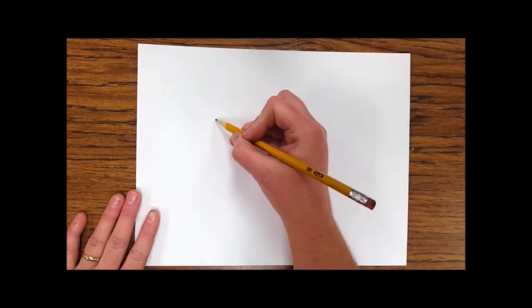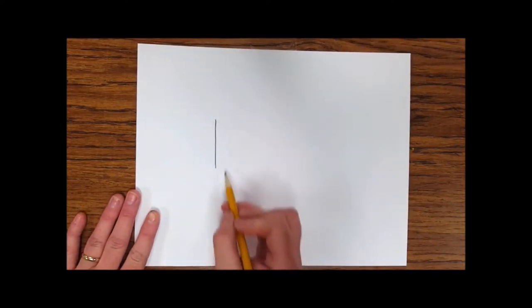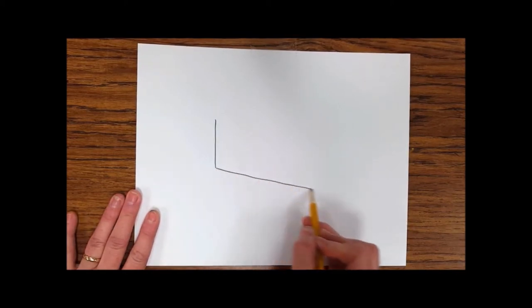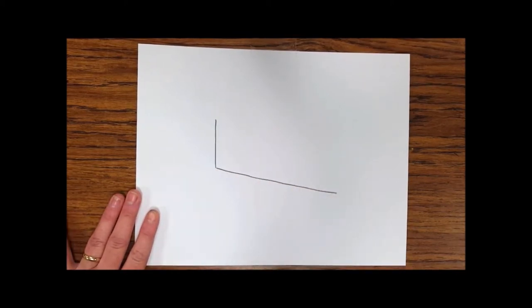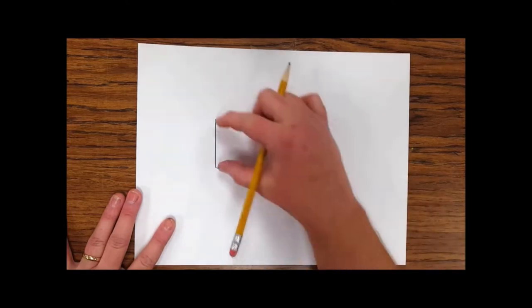Hey guys, today we are going to be drawing a slice of pie. Starting with a short vertical line, I'm going to connect with a long diagonal line that goes down and to the right.